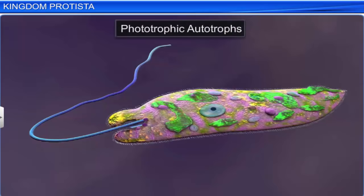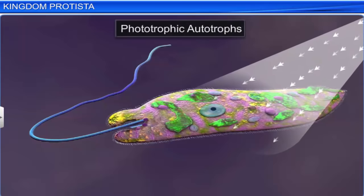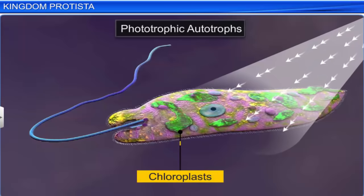Euglenoids are phototrophic autotrophs in the presence of sunlight, since they also have chloroplasts like plants.